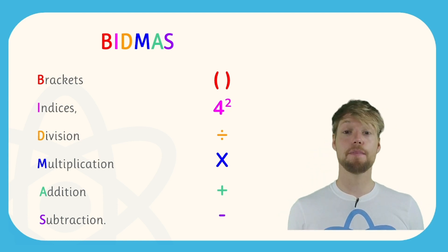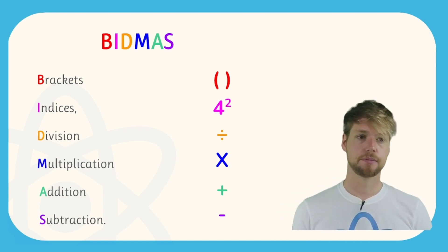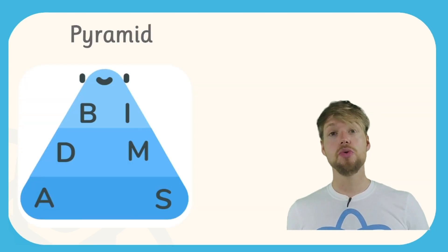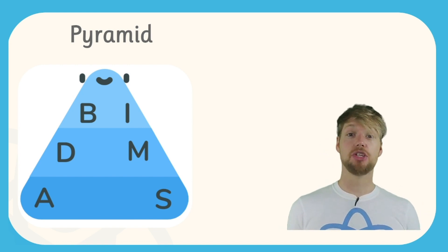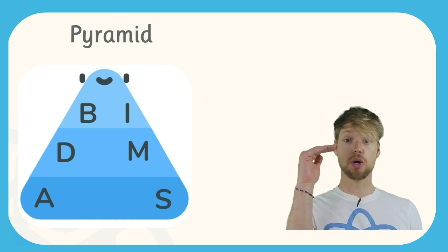Sometimes brackets are called parentheses and sometimes indices are called exponents, so that's where PEMDAS comes from. Now to visualize BIDMAS we can use a pyramid, and this is a useful way of thinking about BIDMAS because it divides the operations into three tiers.